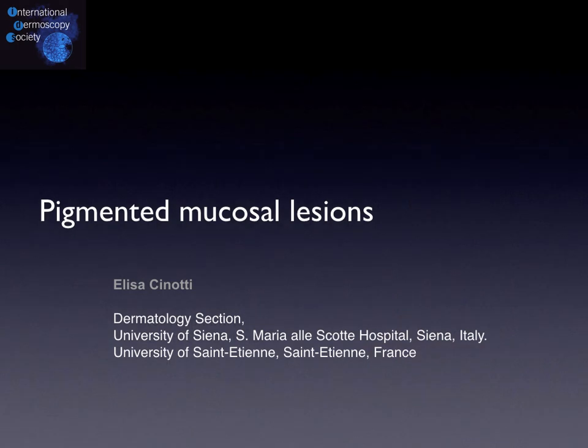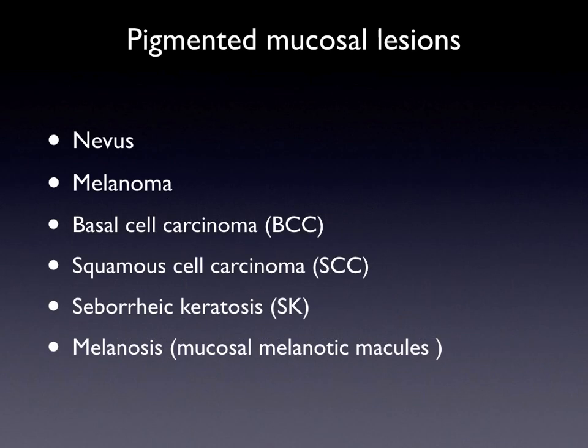Pigmented mucosal lesions include benign and malignant melanocytic proliferations, such as nevi and melanoma, but also non-melanocytic skin tumors. Moreover, non-proliferative entities may occur, the most frequent being benign melanosis.